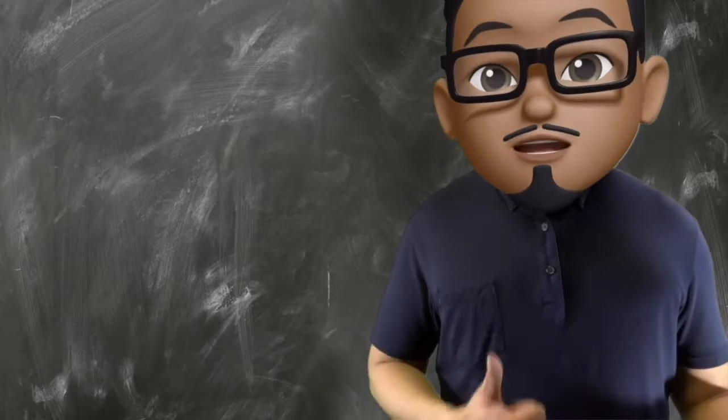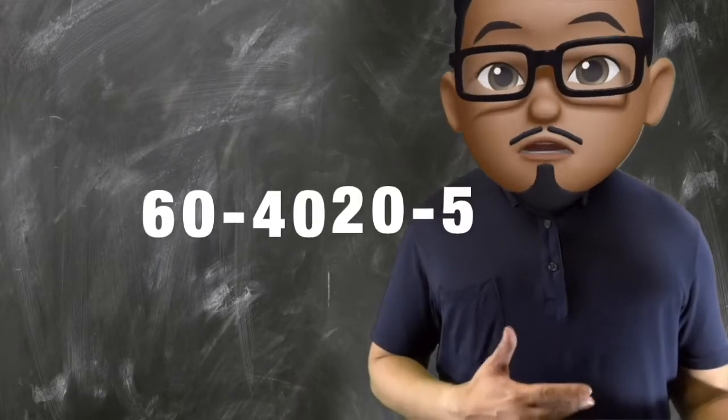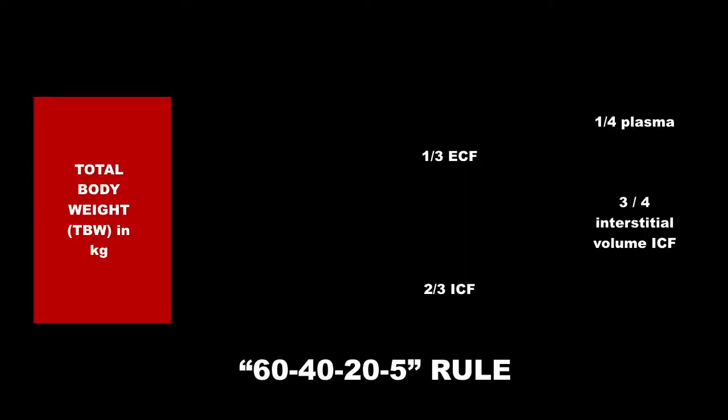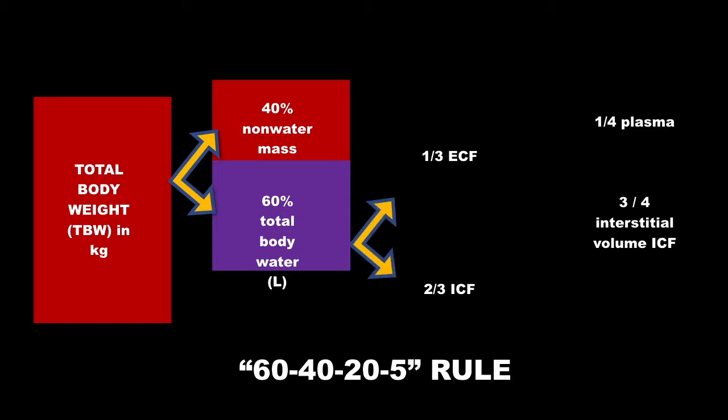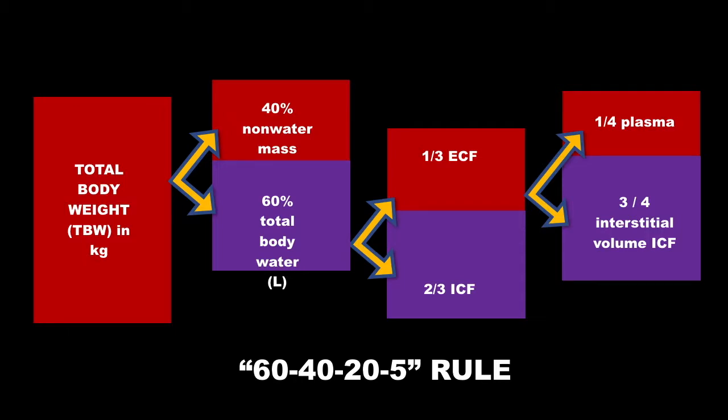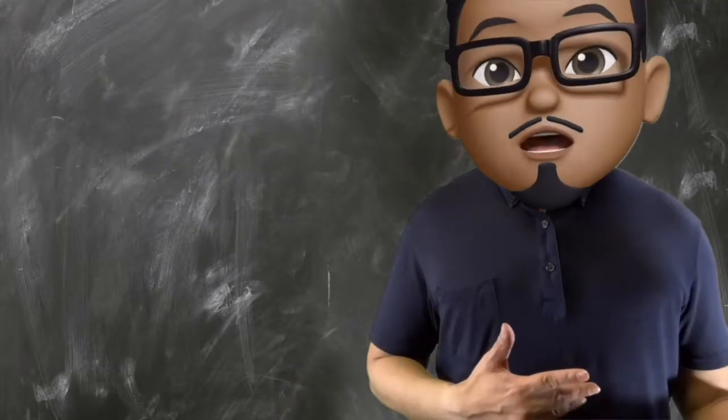Always remember the 60-40-20-5 rule, which means that 60% of your weight is water, 40% of your weight is intracellular, while 20% of your weight is extracellular, and 5% is plasma volume.